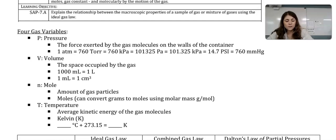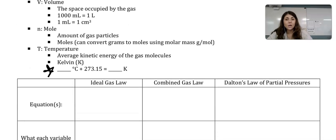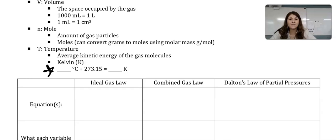Temperature talks about the average kinetic energy of the gas molecules. For conversion, if you need to convert Celsius to Kelvin, you add 273.15. This is so, so important — just know that Celsius is not the true zero. The Kelvin scale is the true zero. If you are given Celsius, convert to Kelvin before doing any math whatsoever.